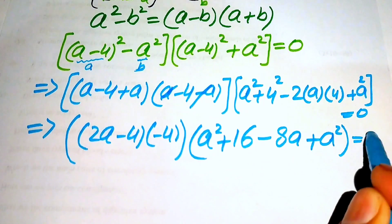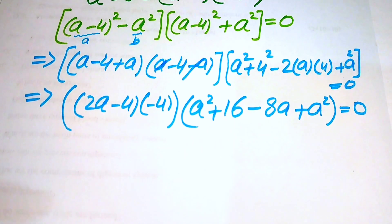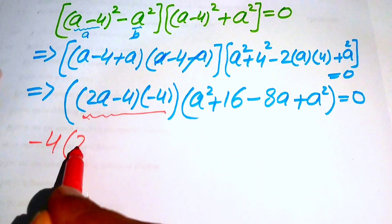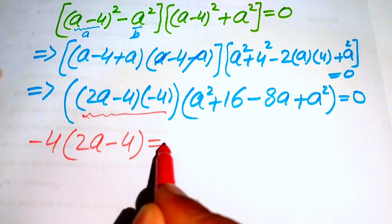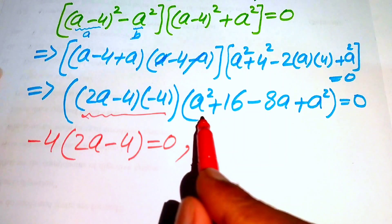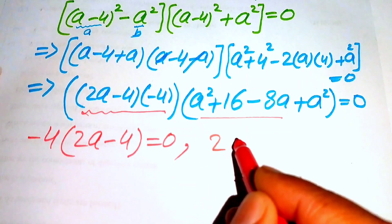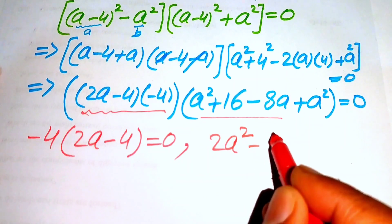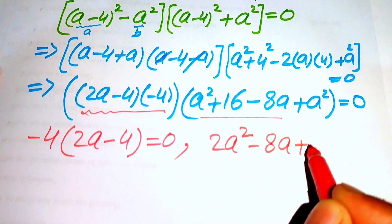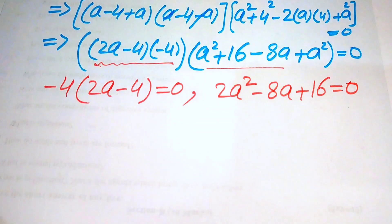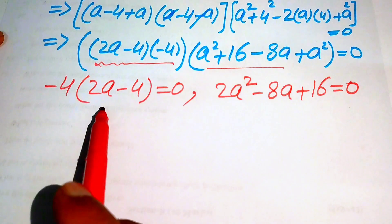We now have two cases. Case 1: -4(2a - 4) = 0. Case 2: 2a² - 8a + 16 = 0. For Case 2, dividing everything by 2 gives a² - 4a + 8 = 0.